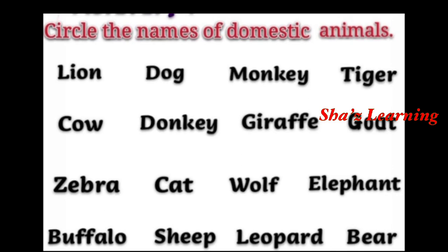What are domestic animals? Is lion a domestic animal? No. Dog is a domestic animal. Tiger is a wild animal. Cow is a domestic animal. Donkey is in the street — donkey is a domestic animal.